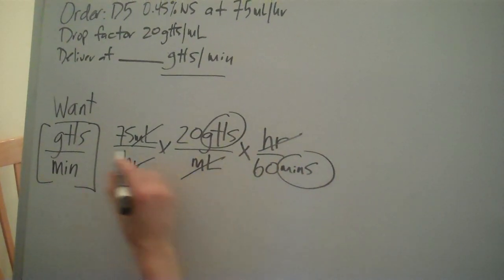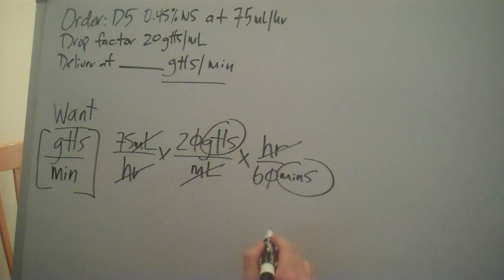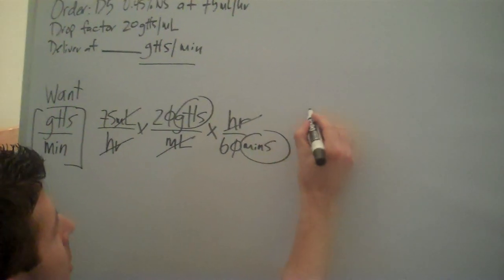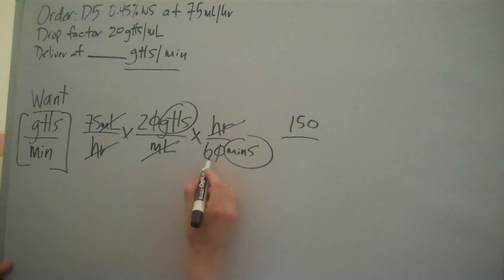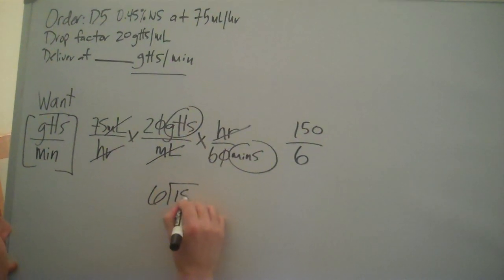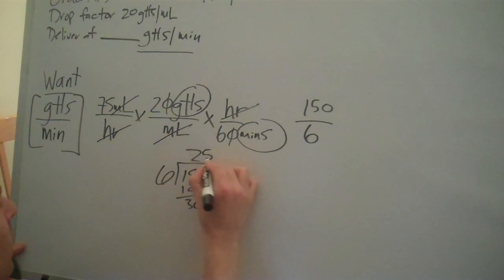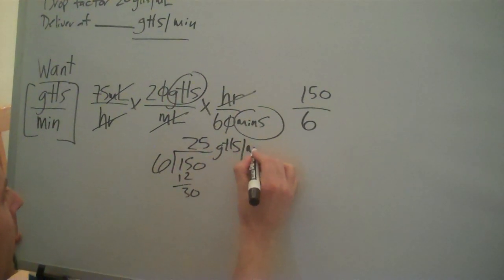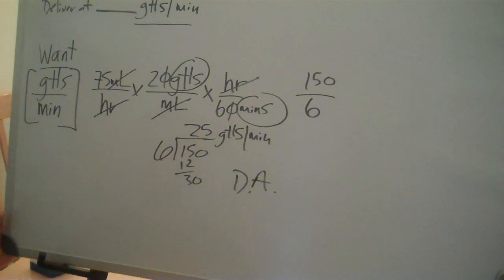So we got that solved. We're going to multiply to make things a little bit easier. We'll cross out the zeros. We have 75 times 2 times 1, which equals 150. 1 times 1 times 6. When you divide, you will get 25 drops per minute by way of dimensional analysis, and that's our problem.